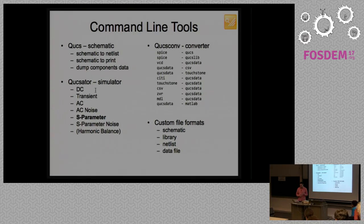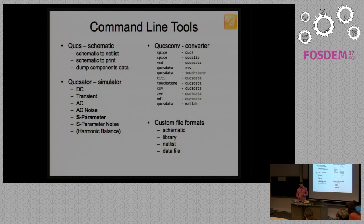The simulator supports DC transient AC S parameter. And, harmonic balance is just for resistors, capacitors, and inductors at the moment. I highlighted here S parameter because this is, to my knowledge, one of the only tools that does that on the open source directly. You can do it with AC simulations, but this is a built-in feature of the tool. That's where it started also. The first commits of the simulator and the user interface were to accommodate S parameter.